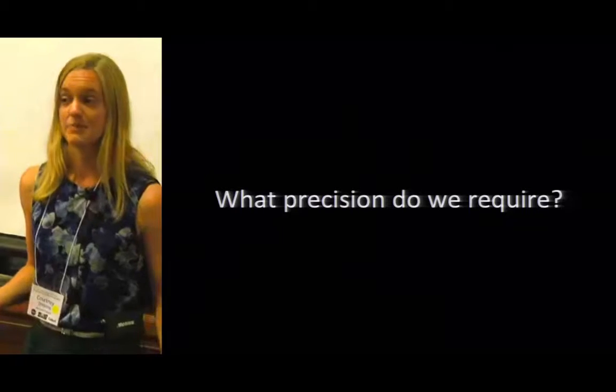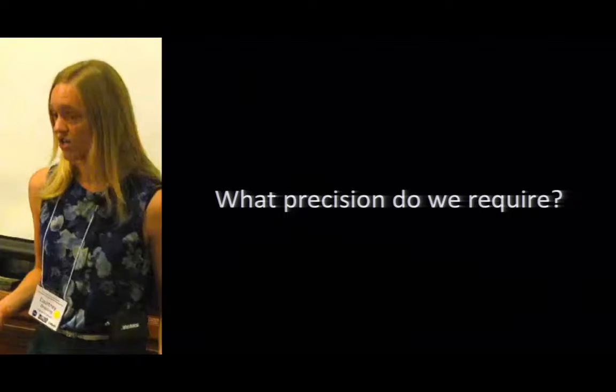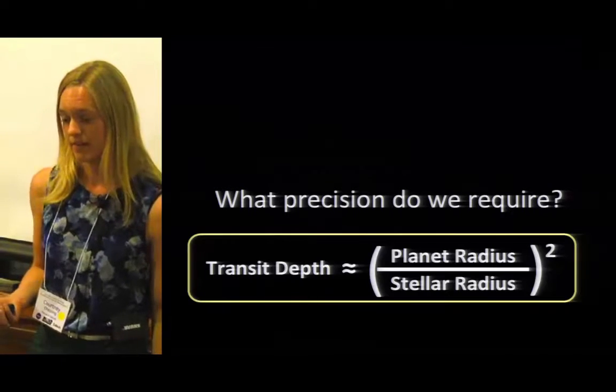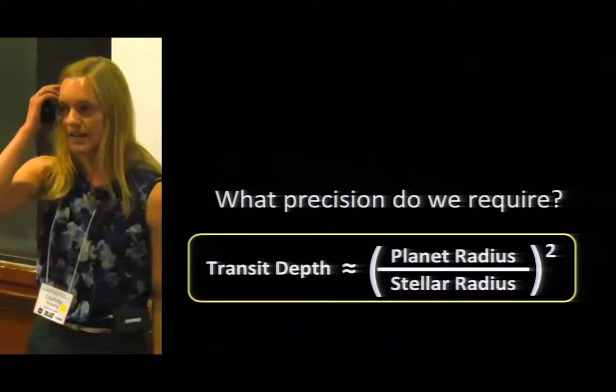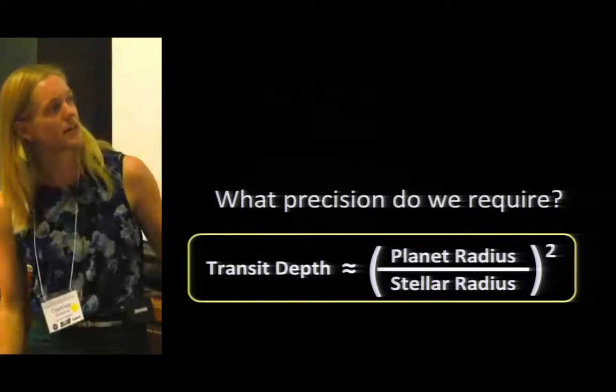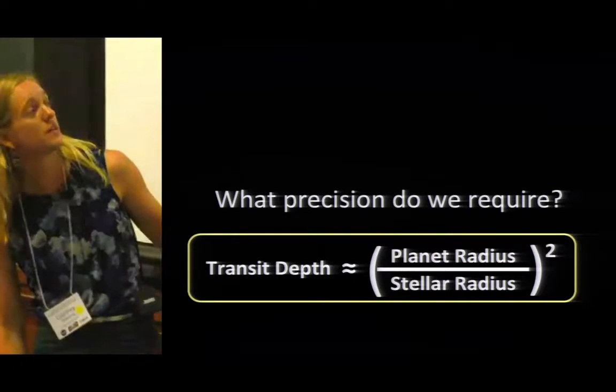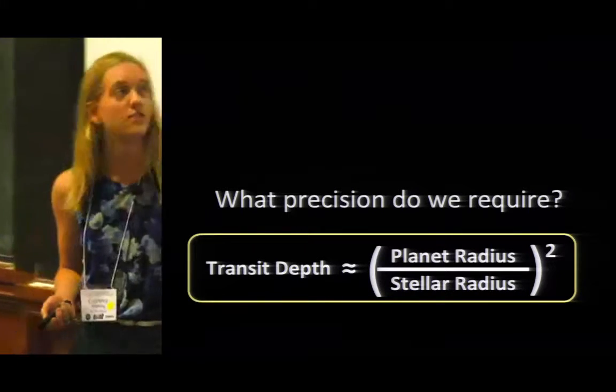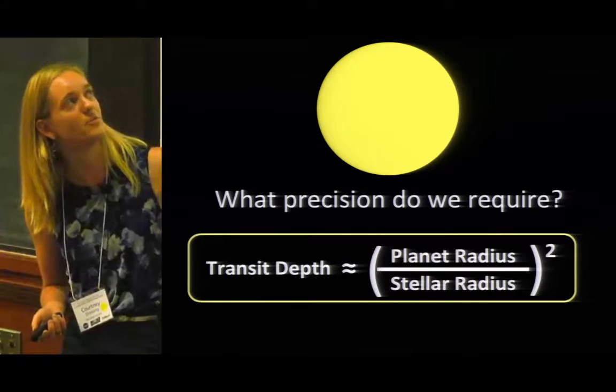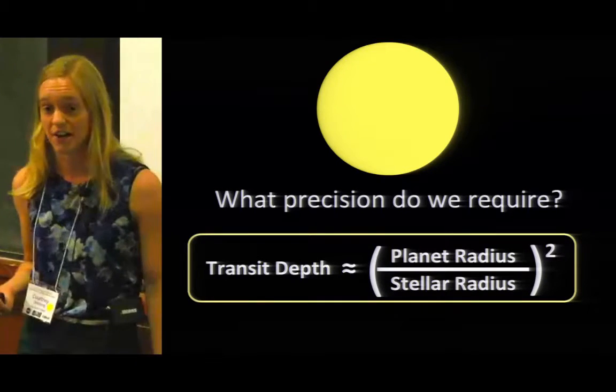So the first question I have for you is what kind of precision do we need in order to see this hot Jupiter around a star like the Sun? Well, to first order, the transit depth is just the ratio of the planet radius over the stellar radius squared. And the reason why this is a squiggly equals, instead of an actual equals, is that stars are not perfectly uniformly illuminated bodies like this. There's limb darkening.